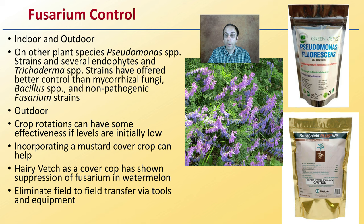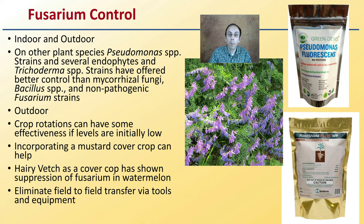There are also biological controls that exist. The goal is to identify fusarium early and try to suppress it. The key part is: if you identify an area that has fusarium, rotate out, give that soil a rest, plant some cover crops, and then come back later with your crop of choice.